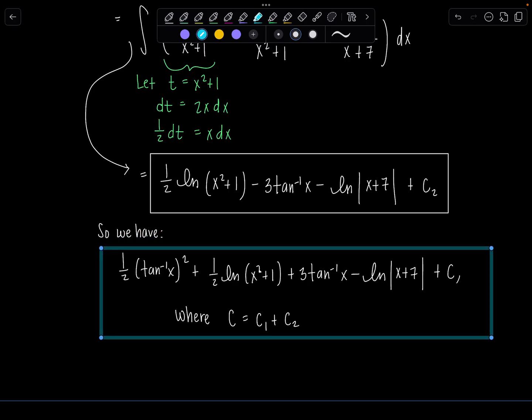Now always be on the lookout. Is there something we could simplify? Anything? Do I want to combine the logarithms? Not really. I say let's stop plus c and then now you tell the people, who is this lovely c? It's c1 plus c2 from earlier.